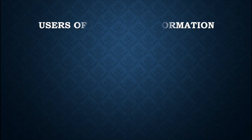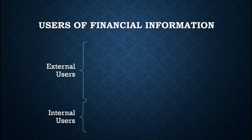Since one of the natures of accounting is that it deals with financial information and transactions, the question is: who are these financial information intended for? There are two broad categories of users of financial information: external and internal users. External users are individuals and organizations outside the company who want financial information about these companies. These users are not directly involved in managing and operating the business.